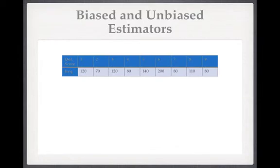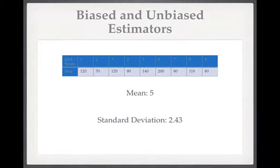To make the example more concrete, suppose you live on a small island where 1,000 people have anal fissure, and you happen to know the distribution of their quality of life scores — a mean of 5 and a standard deviation of 2.43. But you don't know this, so you're sampling: you pick 10 people, work out the mean and standard deviation. If you repeated this experiment many times, picking another 10 people each time, you'd get a bunch of means and a bunch of standard deviations.